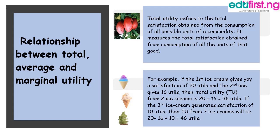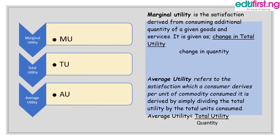Now, what is marginal utility? Marginal utility is the satisfaction we derive from consuming one additional unit of a particular good or service. And what of average utility? Average utility is derived by simply dividing the total utility by the total units consumed.